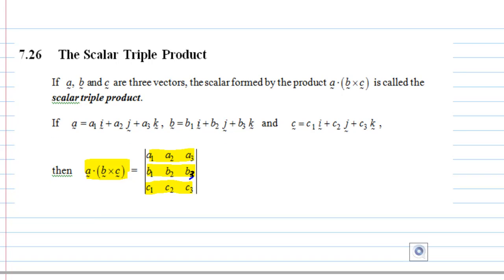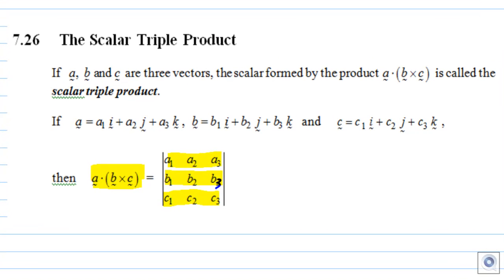And what is the scalar triple product, how do you compute it? a · (b × c) is the determinant formed by a₁, a₂, a₃ in the first row, b₁, b₂, b₃ in the second row, and c₁, c₂, c₃ in the third row.